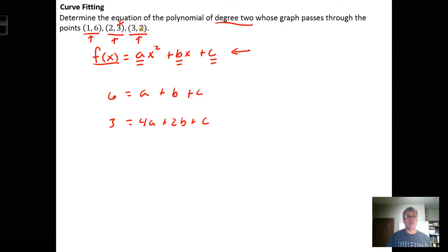This last point says when the output is 2, the input should be 3. So 3² = 9, 9 times a is 9a, plus 3 times b, plus our constant. So 9a + 3b + c = 2.